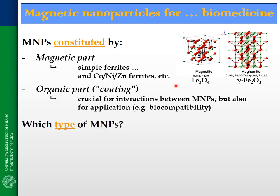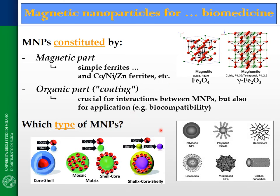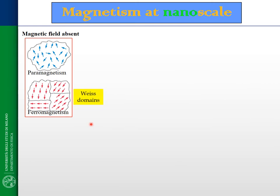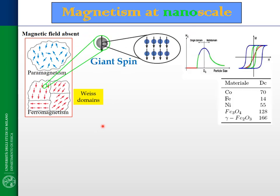Which kind of magnetic nanoparticles can be synthesized? Here I report some examples, but today I want to focus on the easiest magnetic nanoparticles, the core-shell ones. In particular, the magnetism of nanoparticles can be changed dramatically if we are able to produce magnetic nanoparticles with a proper size, depending on which type of ions we decided to use. What we can obtain is a situation where all the electron spins of the material are aligned along the same direction.